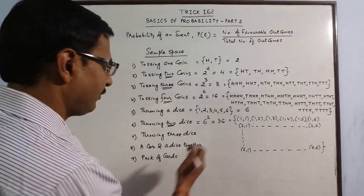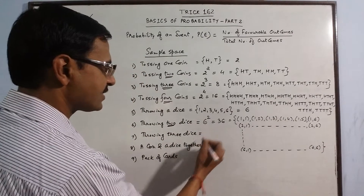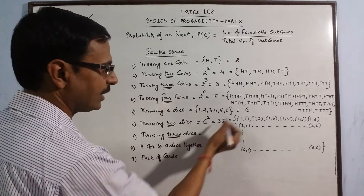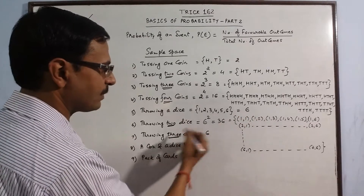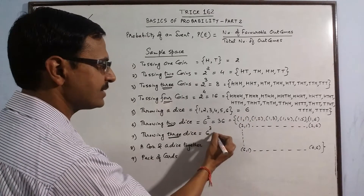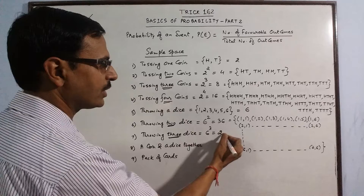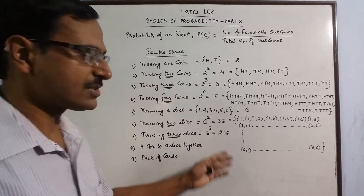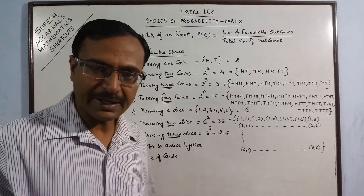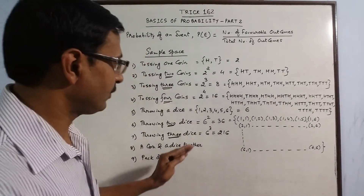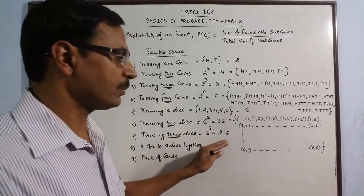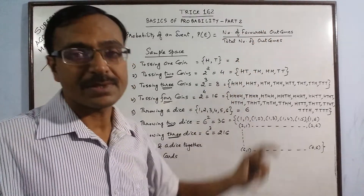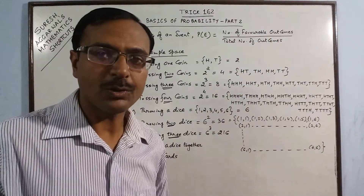Now if you generalize this to 3 dice, in 1 die you have 6 cases raised to the power of the number of dice. So you have 6 cubed, which is 216 cases — difficult to enlist. But questions may still come on this because the number of favorable outcomes may be easier to find.